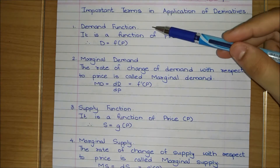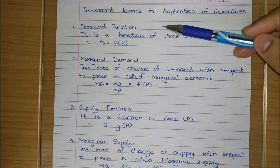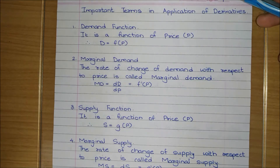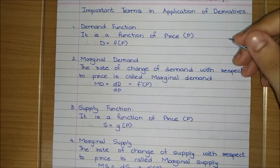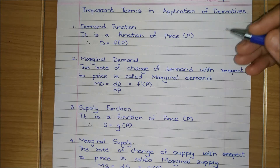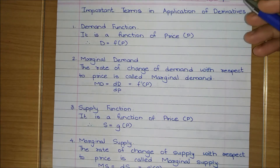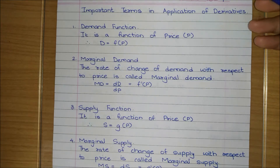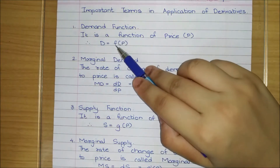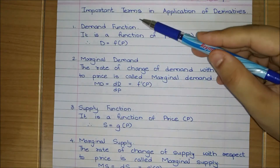The first one is the demand function. Basically, it tells us how much of a commodity is being purchased. It always depends on the price of the commodity — how much demand there is for that commodity. For example, when the price of something is high, its demand goes down, but when the price is low, people buy more. So we say the demand function is a function of price, denoted as f(p).